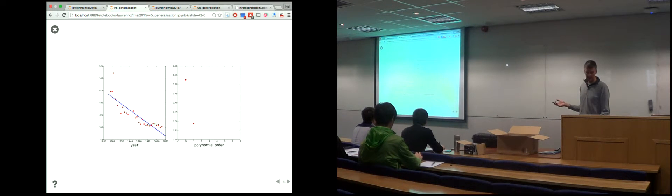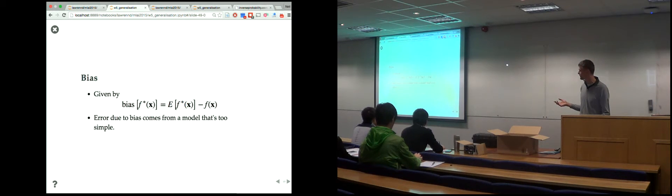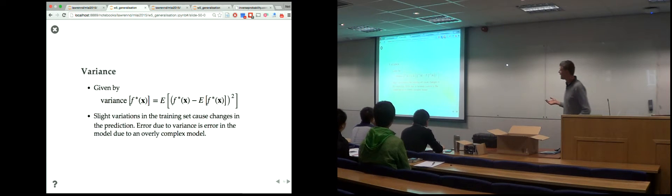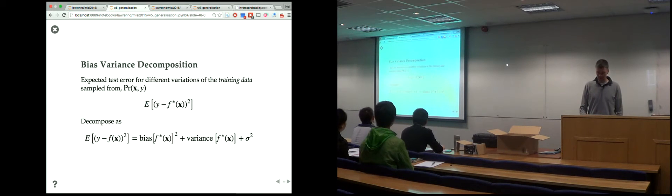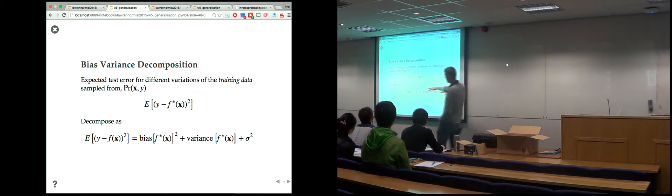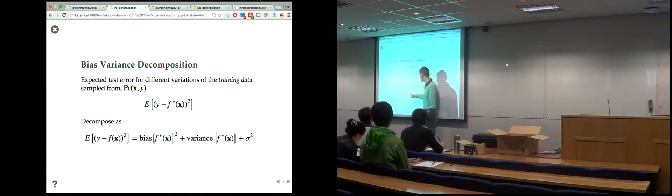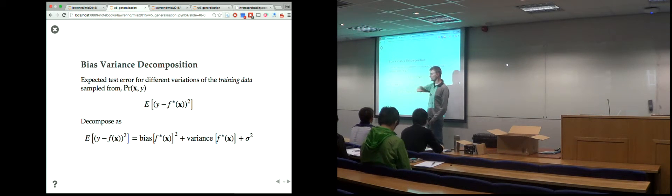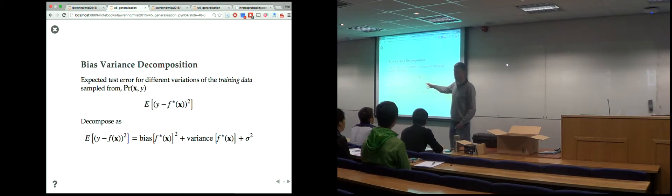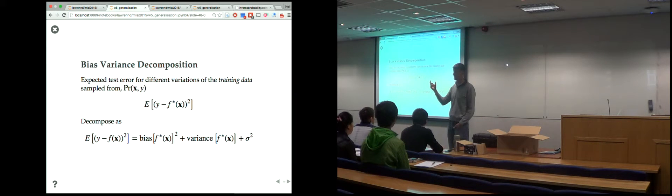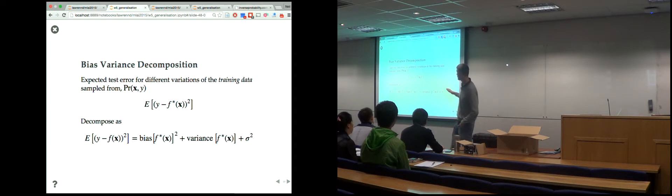You've got this constant trade-off. Simple models don't change as data sets change — they tend to predict the same thing. Like predicting the height of people in this room by average height: every time you take someone out, that value won't change much, so variance is low. But you won't get a very good prediction. Adding more information reduces bias but starts to increase variance.